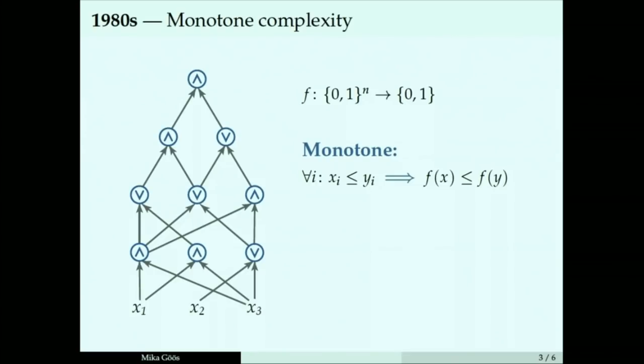Given a monotone Boolean function, you can ask what is its monotone circuit complexity, the least size of a circuit that computes it, the least number of gates. That measures the number of steps you need to compute it, like its time complexity.